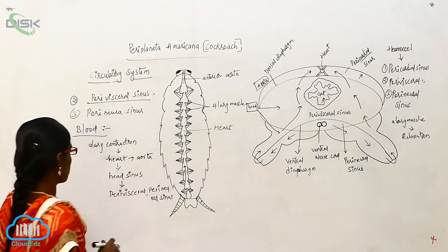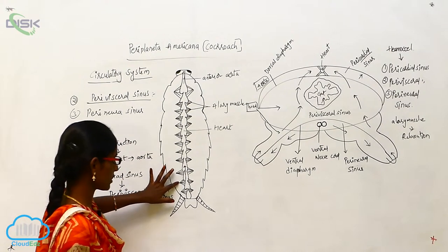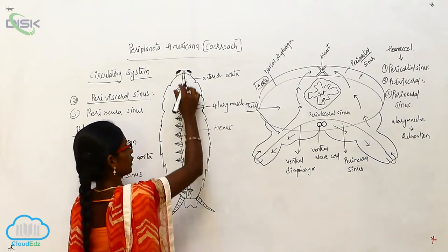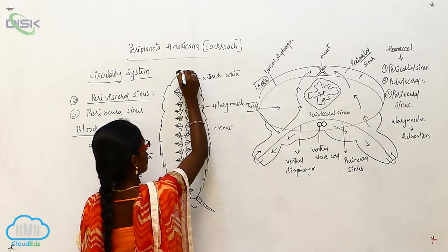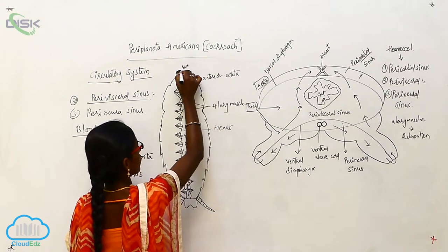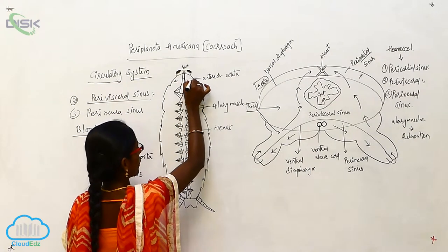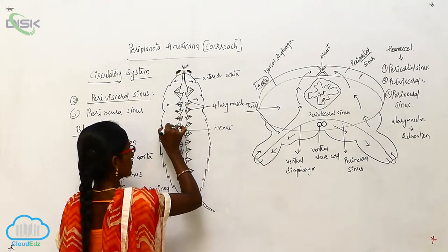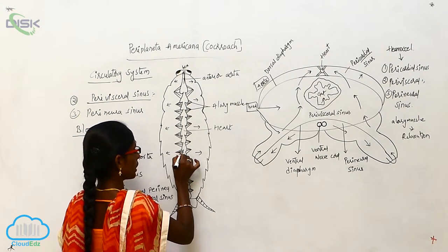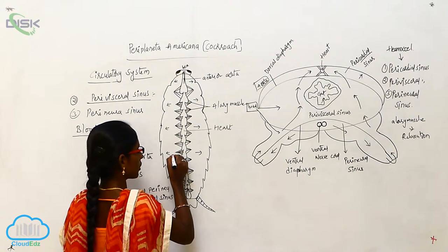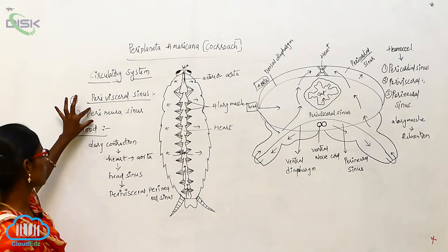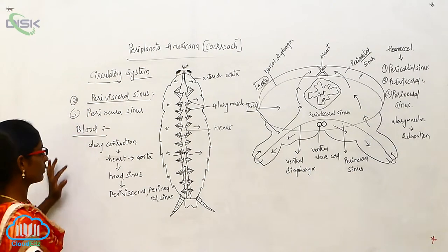This is the blood circulatory system of Periplaneta. When the alary muscles contract, the blood flows anteriorly, goes to the aorta, then to the head sinus, then to the perivisceral and perineural sinuses. On relaxation of the alary muscles, the blood returns to the heart.